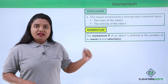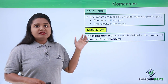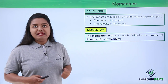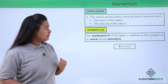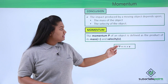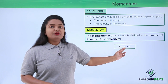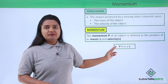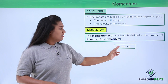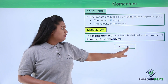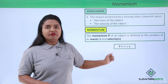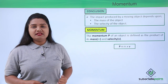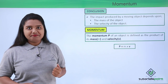We define momentum as the product of the mass and the velocity of a moving body. We denote momentum by the letter p, so p equals m into v, where m is the mass and v is the velocity of the body.